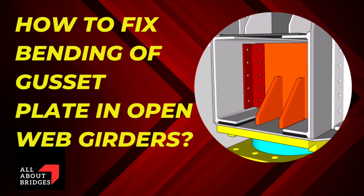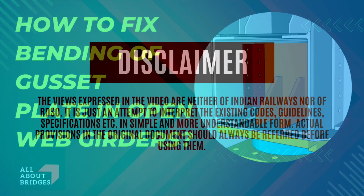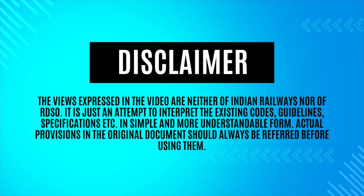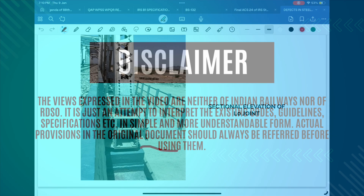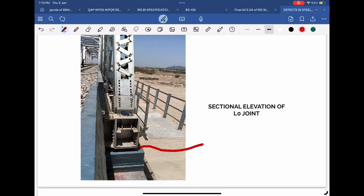In open-web railway girders, a problem is typically encountered where a gap gets created between the top plate of the bearing and the gusset plate of the bottom lateral bracing. In this video, we will understand the problem and its solution with the help of diagrams, photos, and an animated video.